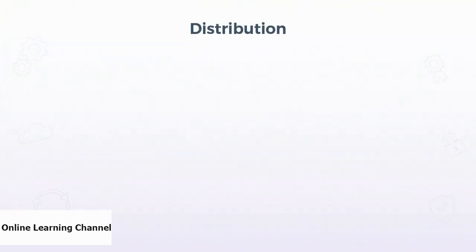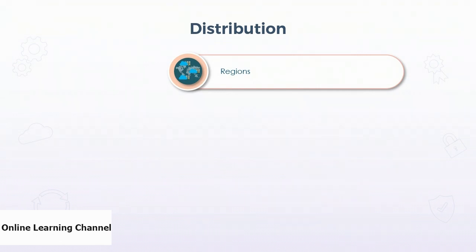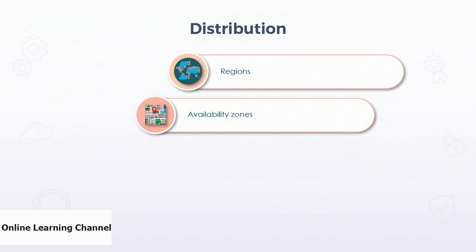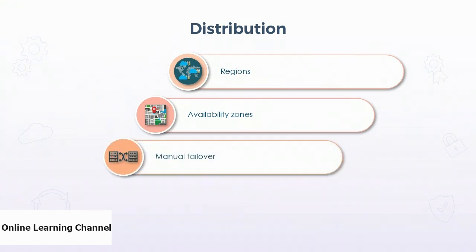Data in Azure Storage accounts is always replicated for resiliency, but there are optional tiers for replication at additional cost. Regional replication is not enabled by default but will replicate data from the source region to another region within the Azure platform. A region is a set of data centers connected locally but geographically distant from another Azure region. Availability zones are independent data centers within an Azure region with their own cooling, power, and networking. Data replicated to an availability zone will failover automatically if there is an outage, but data replicated to a secondary region will require a manual failover.